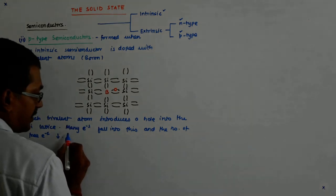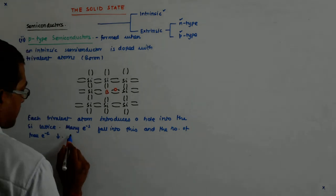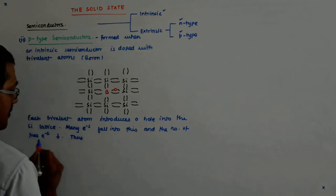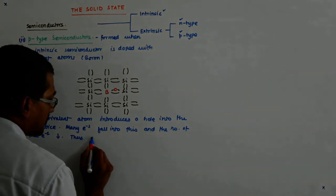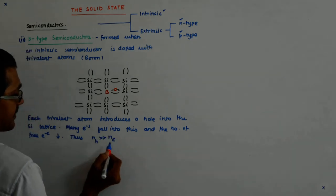The number of free electrons decreases. NH becomes very, very greater than NE.